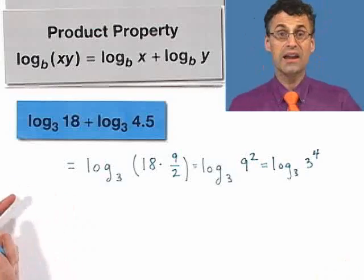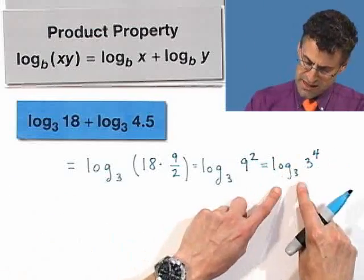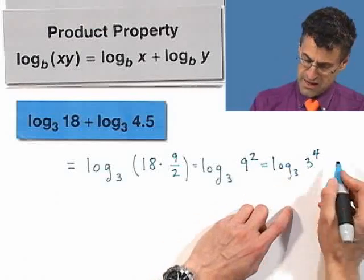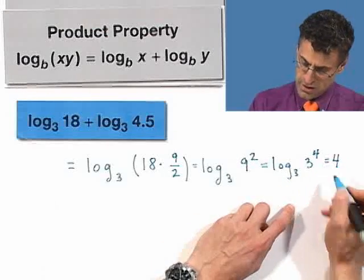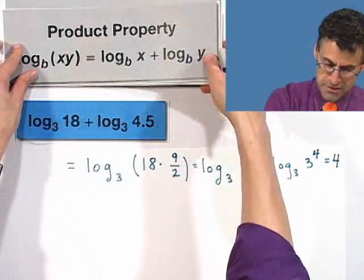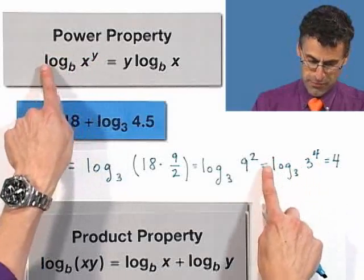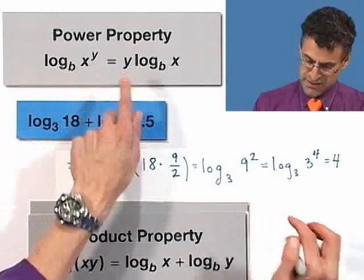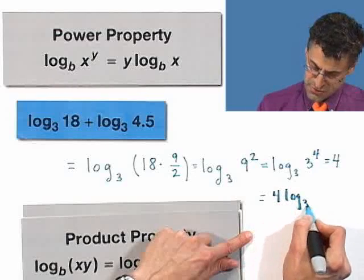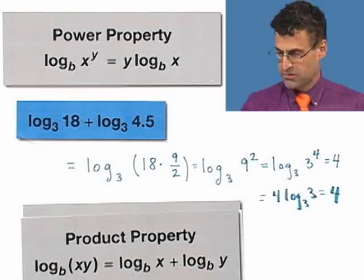And now I can do a variety of things here depending upon your mood. You could either think about what this means. This is the exponent I have to raise 3 to in order to make it equal 3 to the 4th. So the answer would be 4. Another way is to use that property I just showed you, which says that if you have an exponent, you can pull the exponent out in front. And so I could write this as 4 log base 3 of 3, and that's just 1. So 4 times 1 is 4.